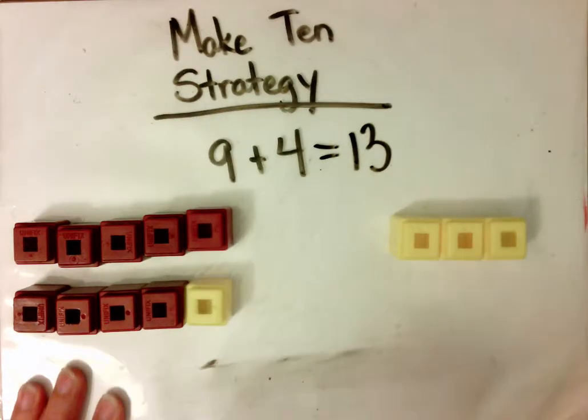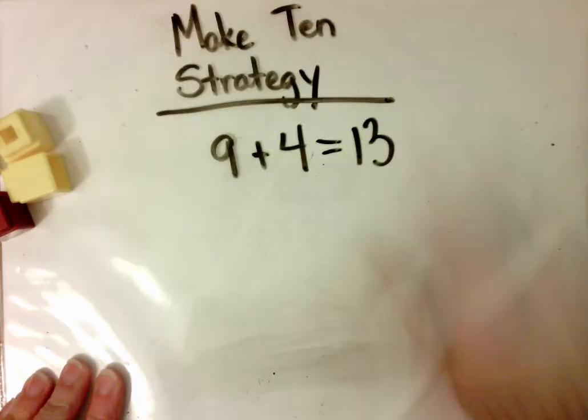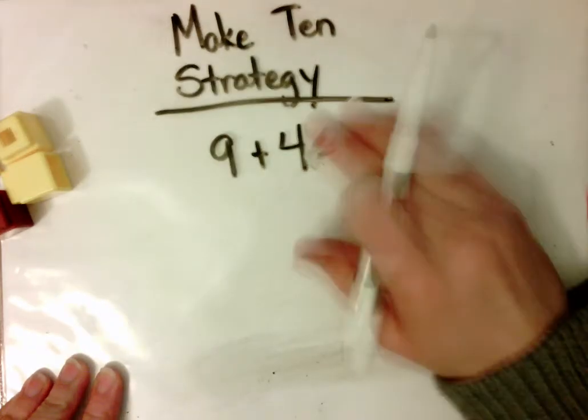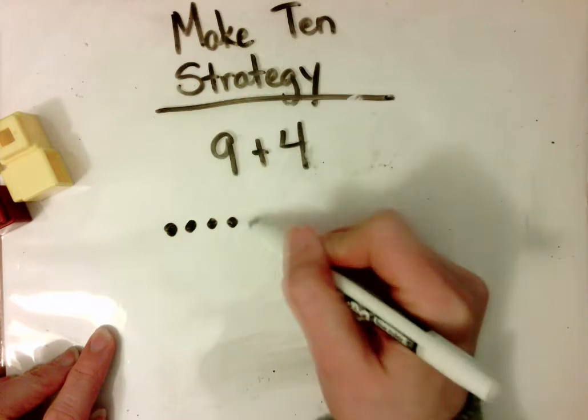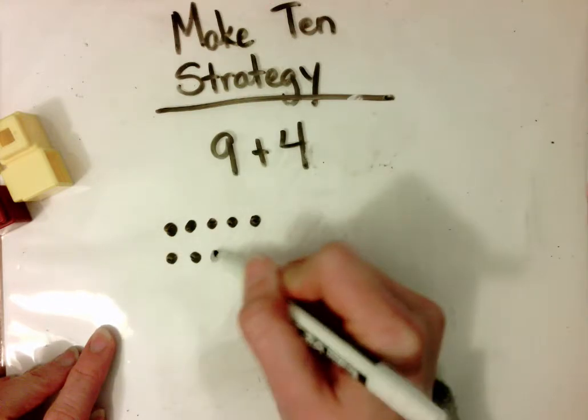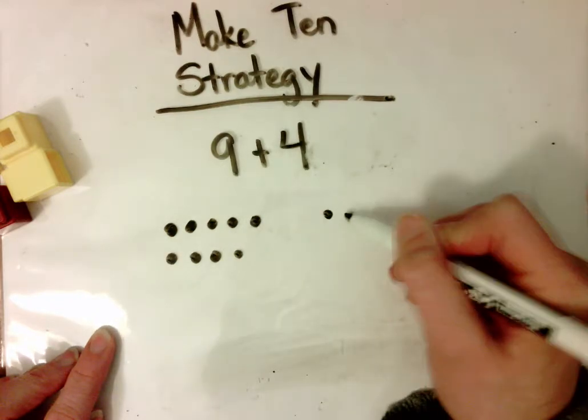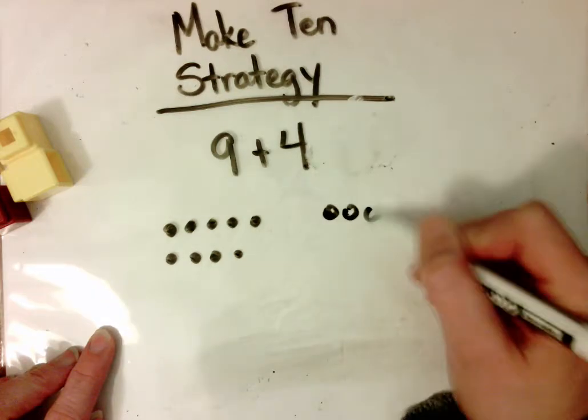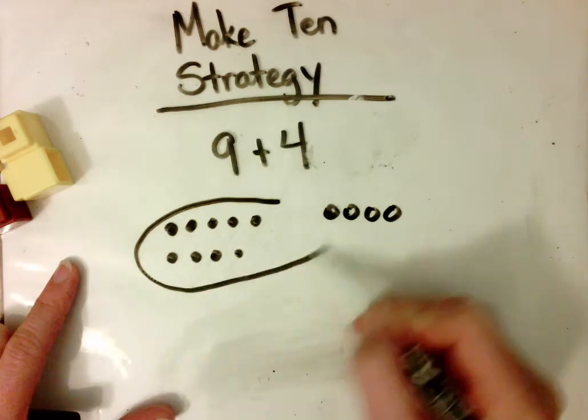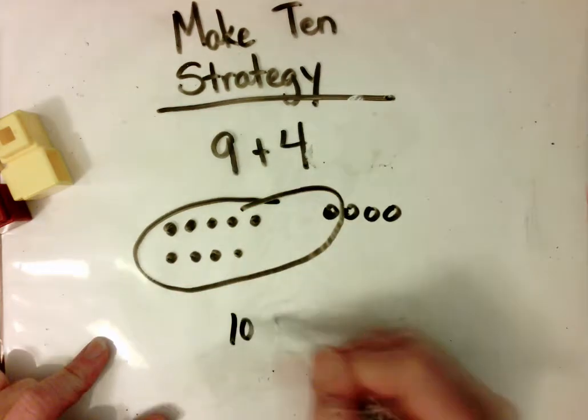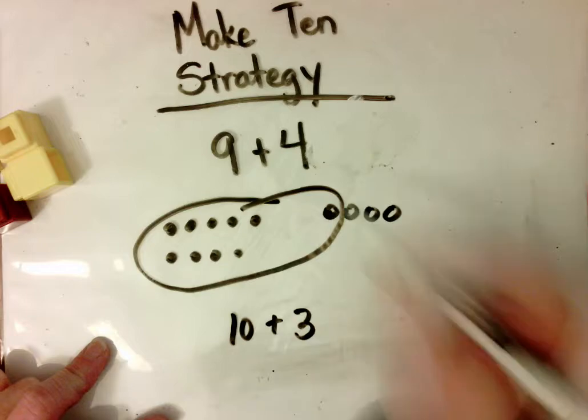If I was showing you this with a picture, I would draw my 9, and I can do this a couple of ways. I could draw 9 and draw 4, and I'll make some closed and some open so you can see the difference. And I can put a ring around it. Let's make 10. I see 10 plus 3, 13.